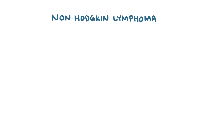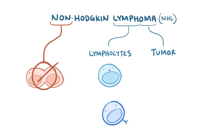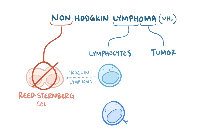The term non-Hodgkin lymphoma, sometimes called NHL, can be broken down. Lymph refers to lymphocytes, and oma refers to a tumor. Non-Hodgkin refers to the absence of a key cell that's seen in Hodgkin lymphoma, the Reed-Sternberg cell.